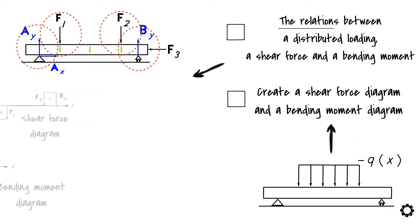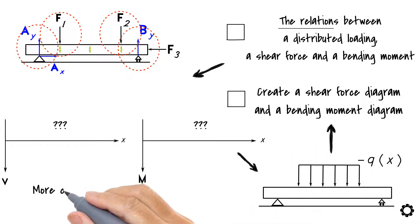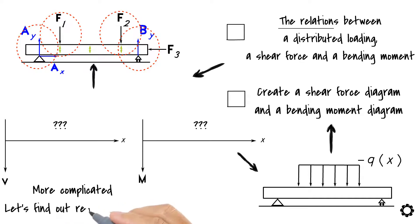As was mentioned in the previous video, defining a shear force and a bending moment diagram in the distributed loading situation is more complicated than in situations where the structure is only subjected to an external point load. Let's find out the reason for this.